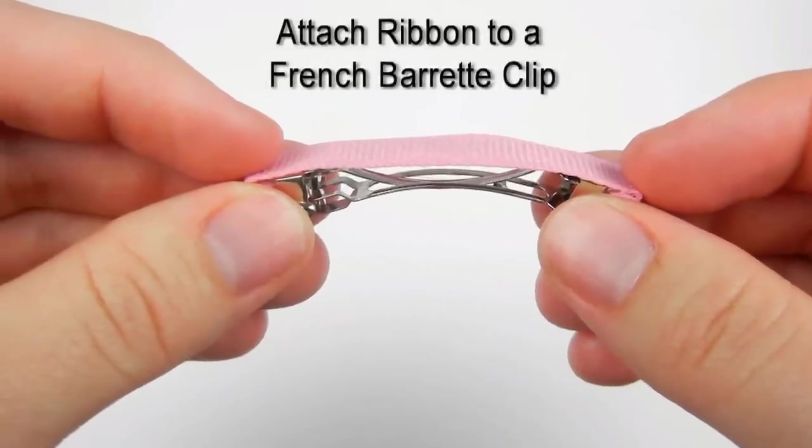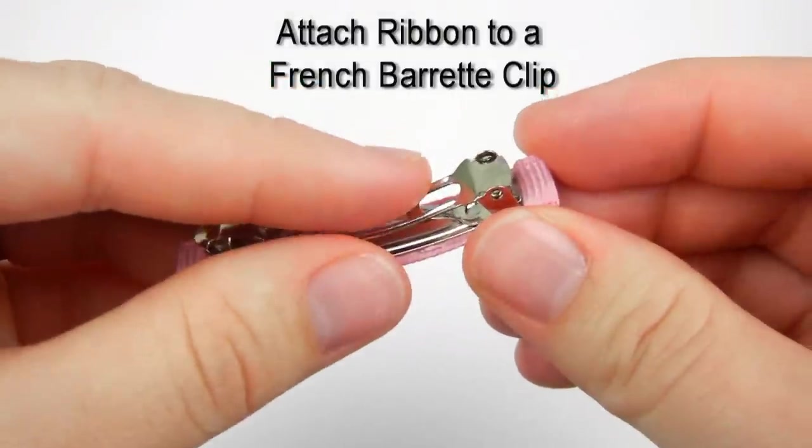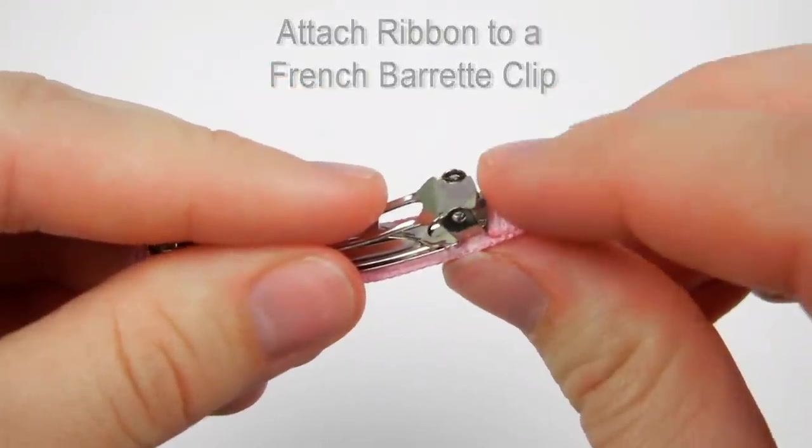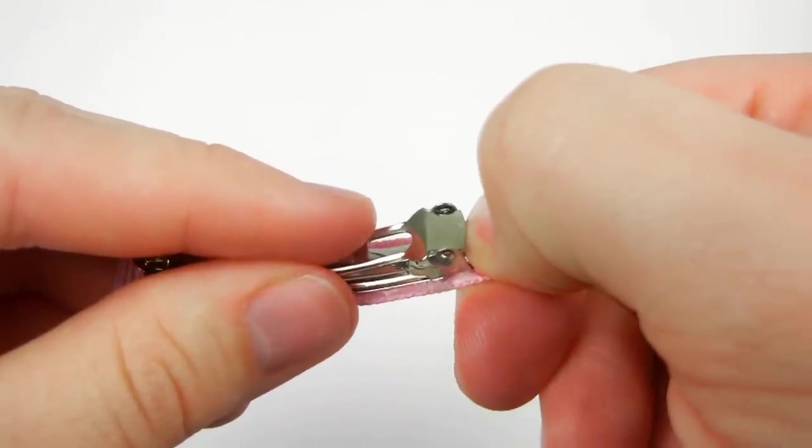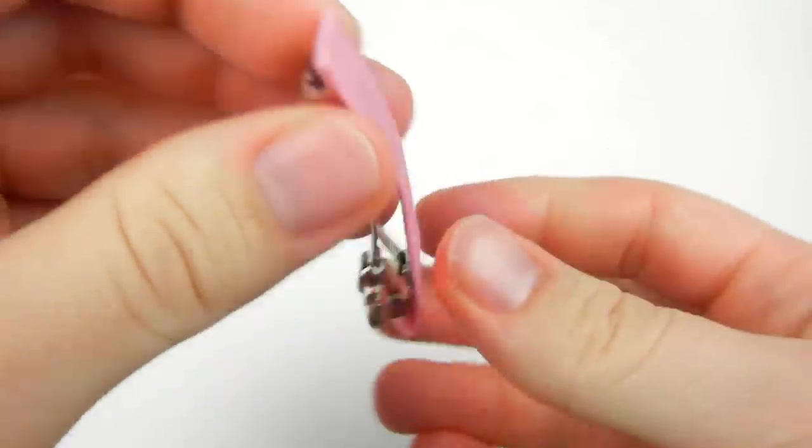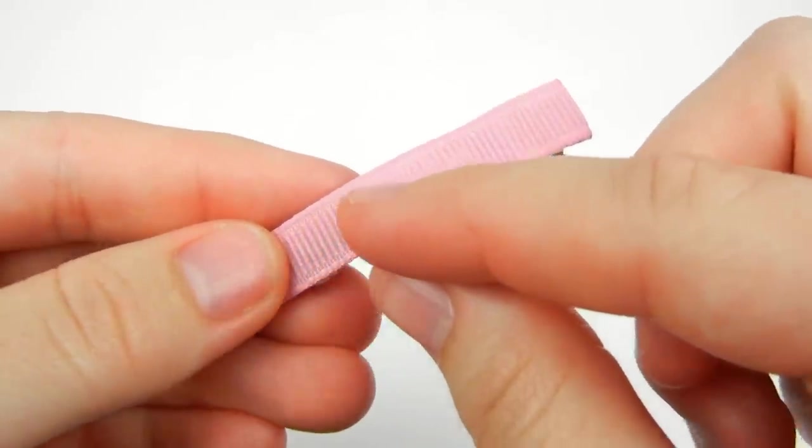Attaching the ribbon to a French barrette clip is very similar. Put a dab of glue on the end of the clip. Bring the end of my ribbon and adhere it to the clip. Then bring your clip over and put hot glue all along the top of the clip.